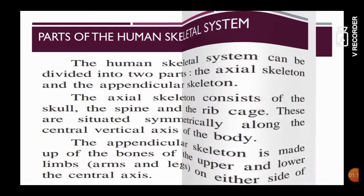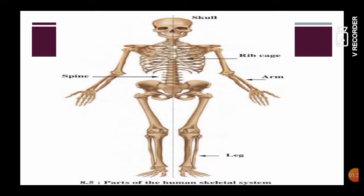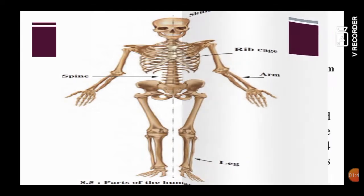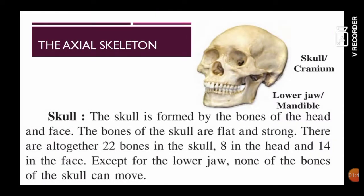Now we will study it in detail. If we draw a straight line along the central vertical axis, we can see that the skull, ribcage, and spine make a symmetrical line. We will first study the axial skeleton. In the axial skeleton there are three parts: the skull, ribcage, and spine (vertebral column). First, we will study about the skull — the bones present in your head.